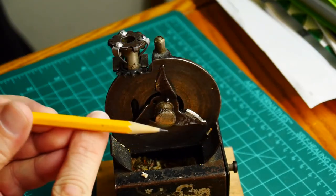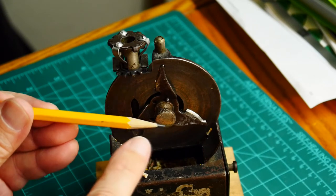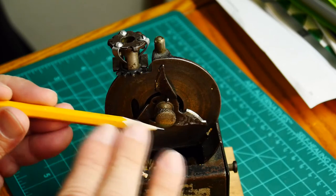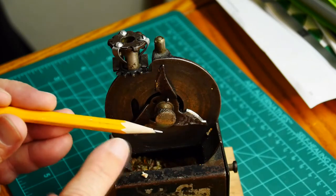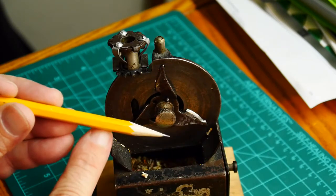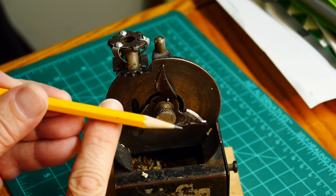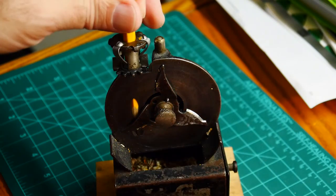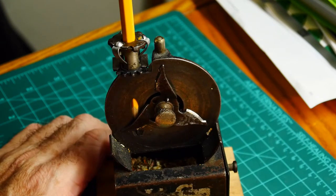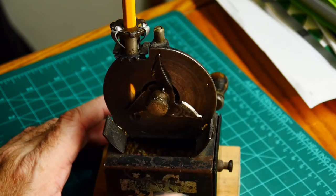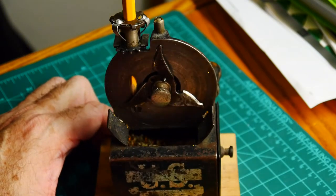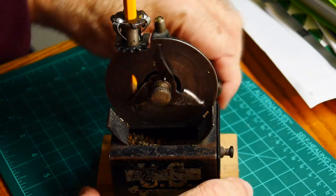And it actually puts a very nice point on the pencil. The cool thing is it's not conical, it's actually little facets on the end of the pencil. So very cool machine. I forget who made this one, I can't read anymore. I even have the patent for this, I should probably try to find it.